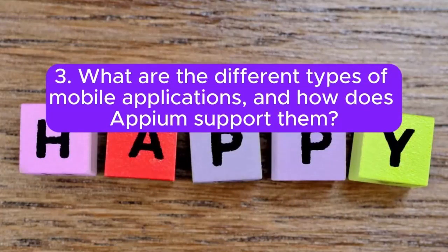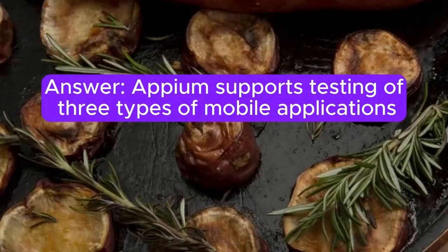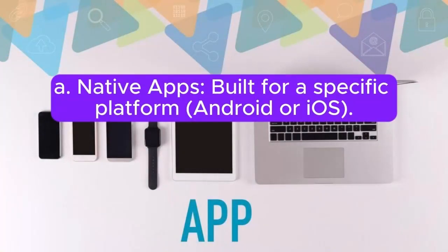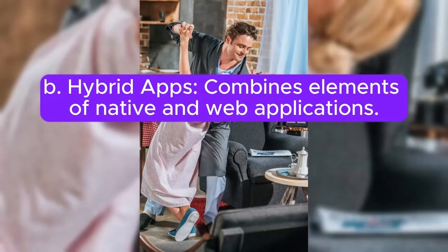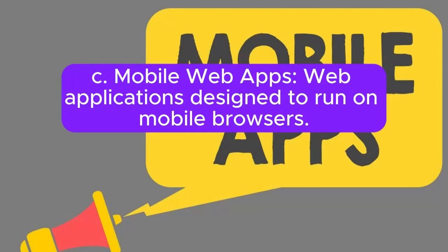3. What are the different types of mobile applications, and how does Appium support them? Appium supports testing of three types of mobile applications: A. Native apps, built for a specific platform, Android or iOS. B. Hybrid apps, which combine elements of native and web applications. C. Mobile web apps, which are web applications designed to run on mobile browsers.